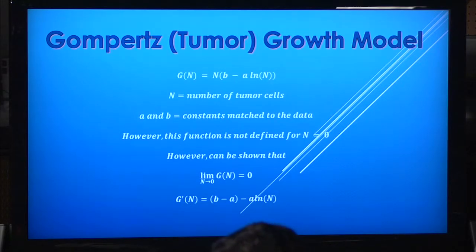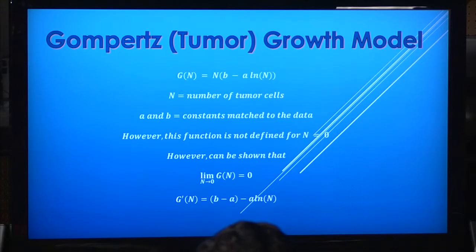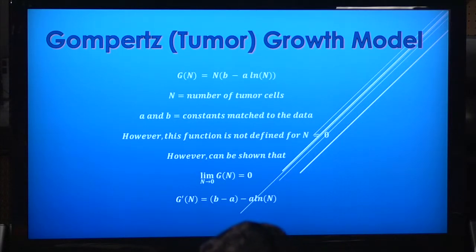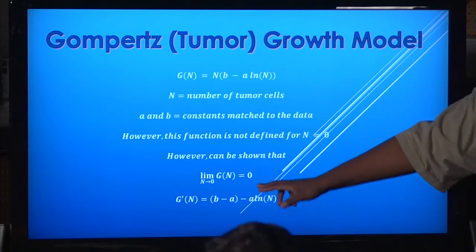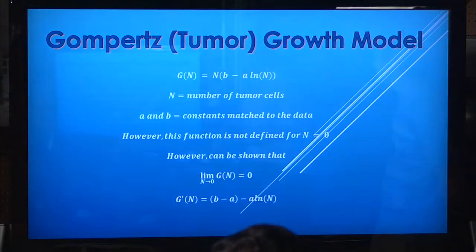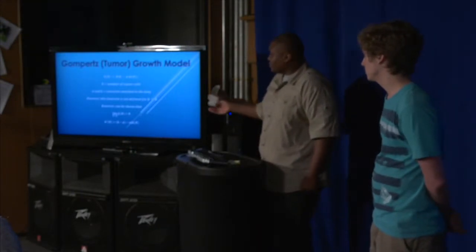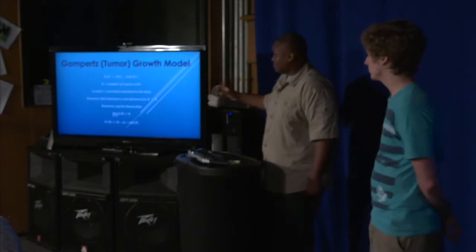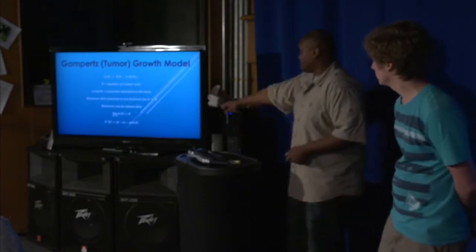This is the actual Gompertz model: G(N) equals N times (B minus A) times ln(N), where N is the number of tumor cells and A and B are constants matched to the data. However, this function is not defined for N when N equals zero. To find what happens at N equals zero, we take the limit as N approaches zero, and it becomes zero. The actual derivative of the growth model tells you the rate of change at which the tumor grows.